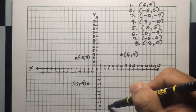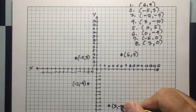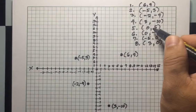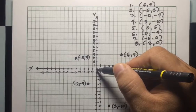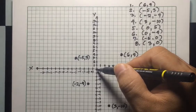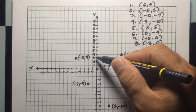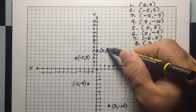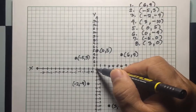For number five, the point is (0, 5). X is zero so you do not move horizontally. Y is five and positive, so move upward five units: one, two, three, four, five. This is point (0, 5).